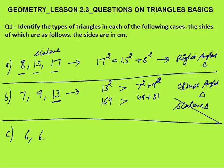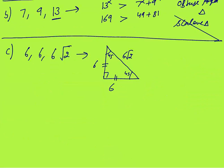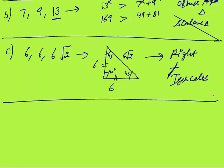Third case: sides are 6, 6, and 6√2. This is a 45-45-90 degree triangle. The two equal sides are 6 and 6, and the hypotenuse is 6√2, with the right angle being 90 degrees. So this is a right angle triangle. It is also an isosceles triangle since two sides are the same. On the basis of angle it is a right angle triangle; on the basis of sides it is an isosceles triangle.